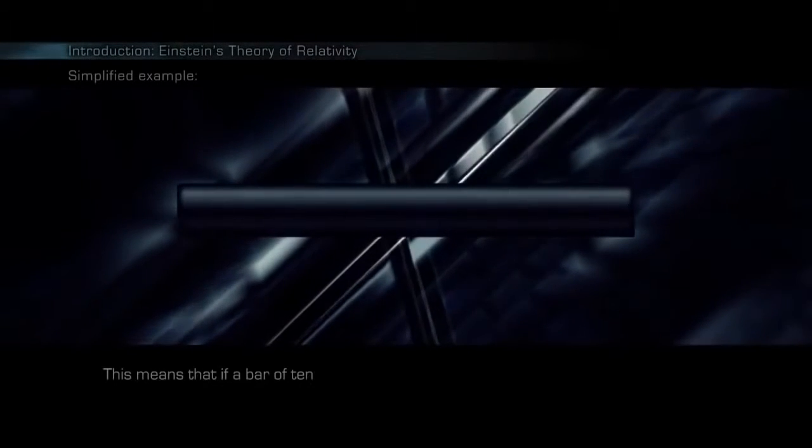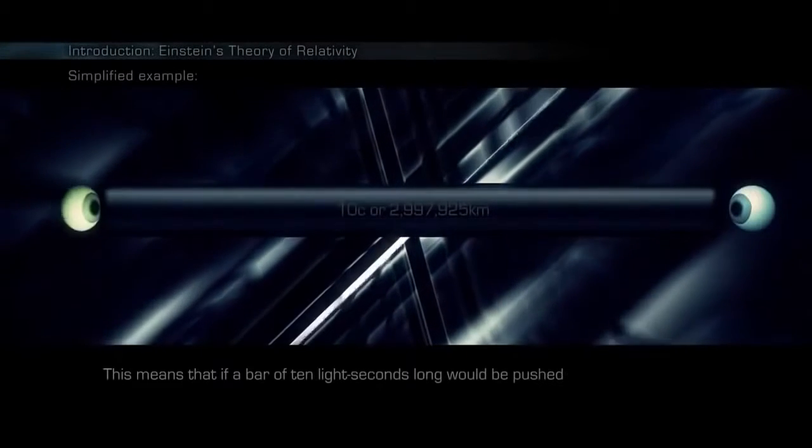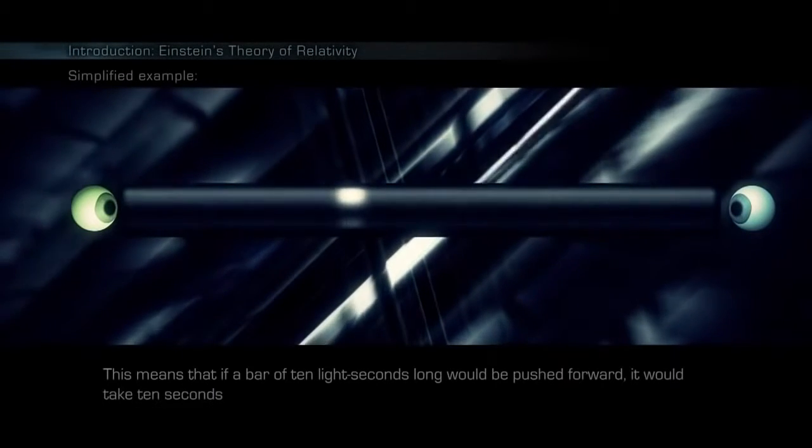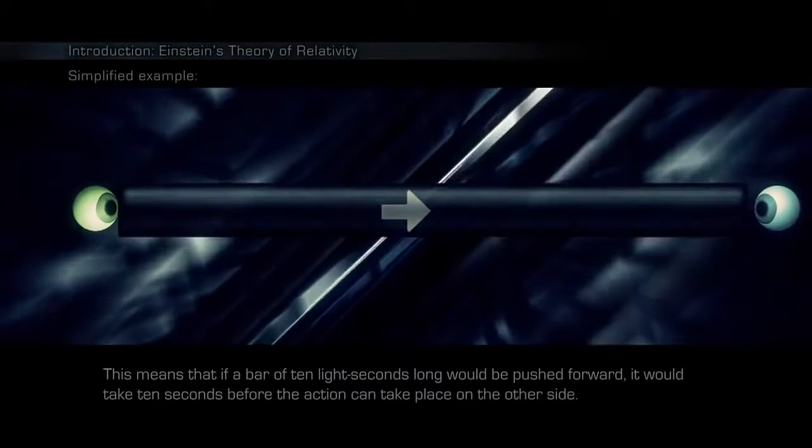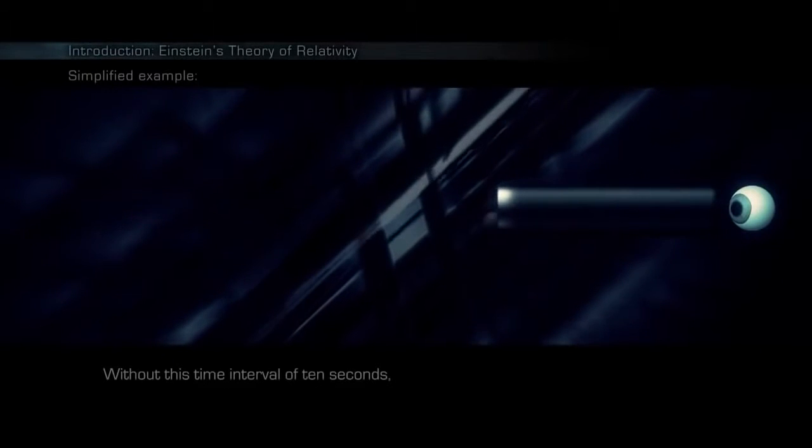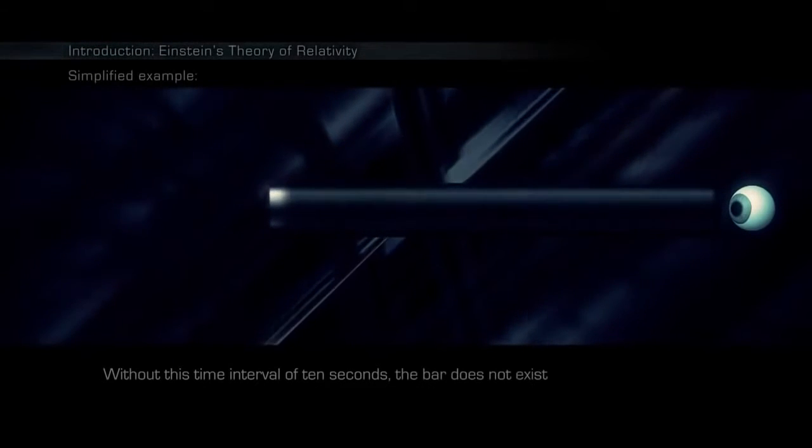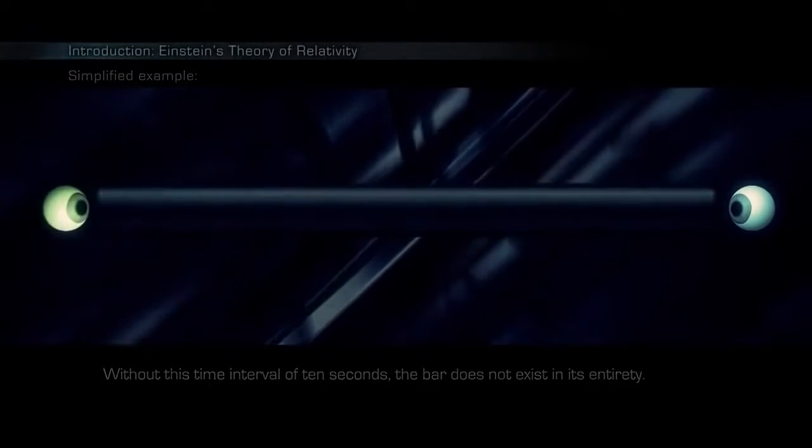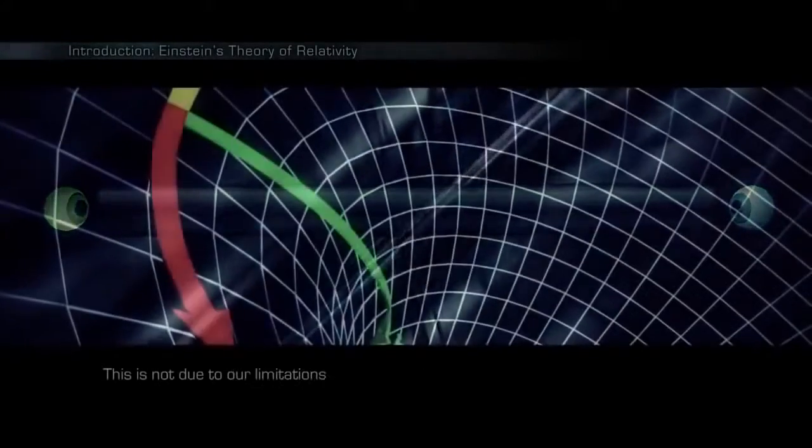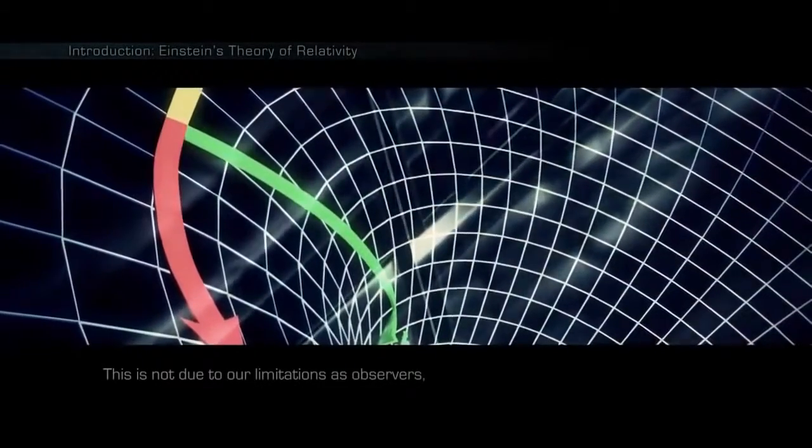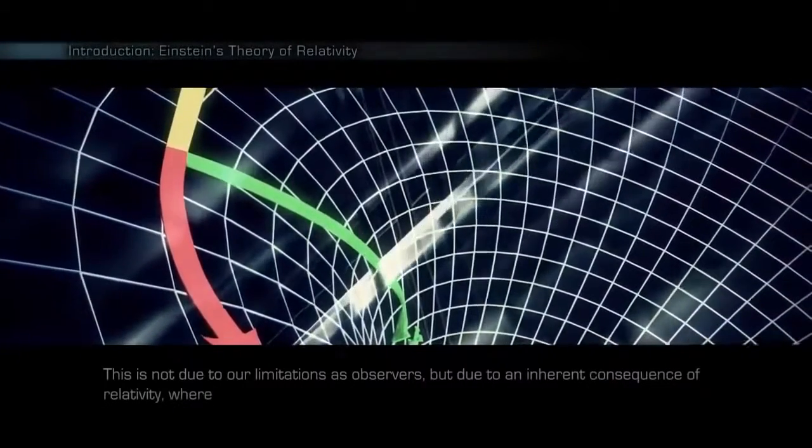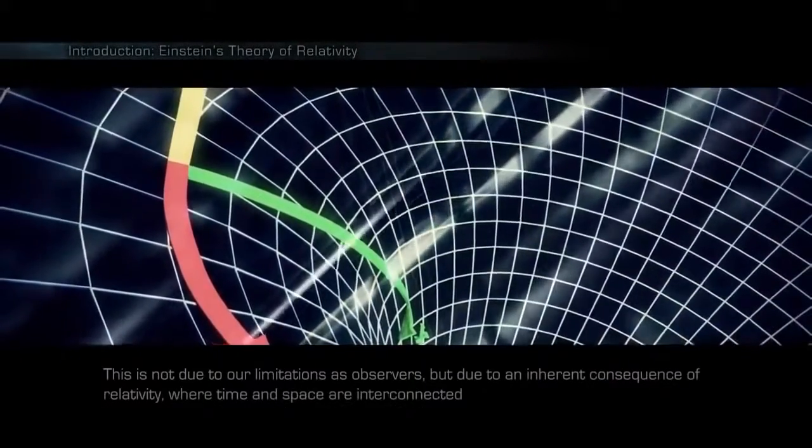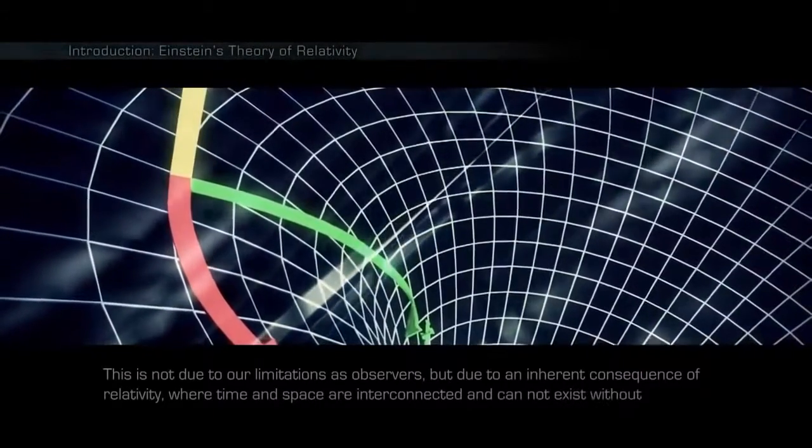This means that if a bar of 10 light seconds long would be pushed forward, it would take 10 seconds before the action can take place on the other side. Without this time interval of 10 seconds, the bar does not exist in its entirety. This is not due to our limitations as observers, but due to an inherent consequence of relativity where time and space are interconnected and cannot exist without each other.